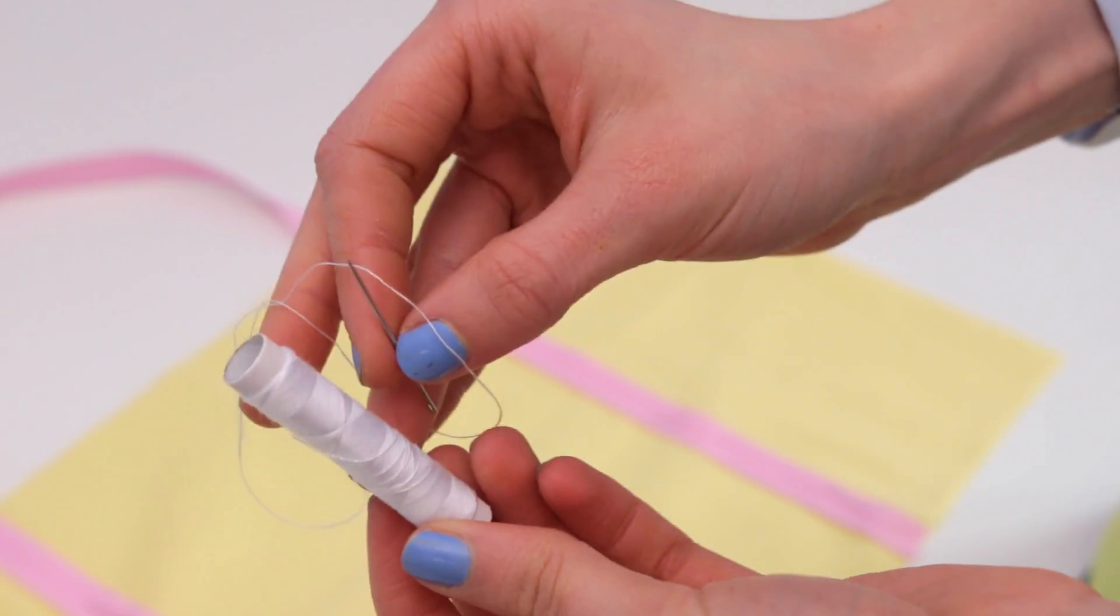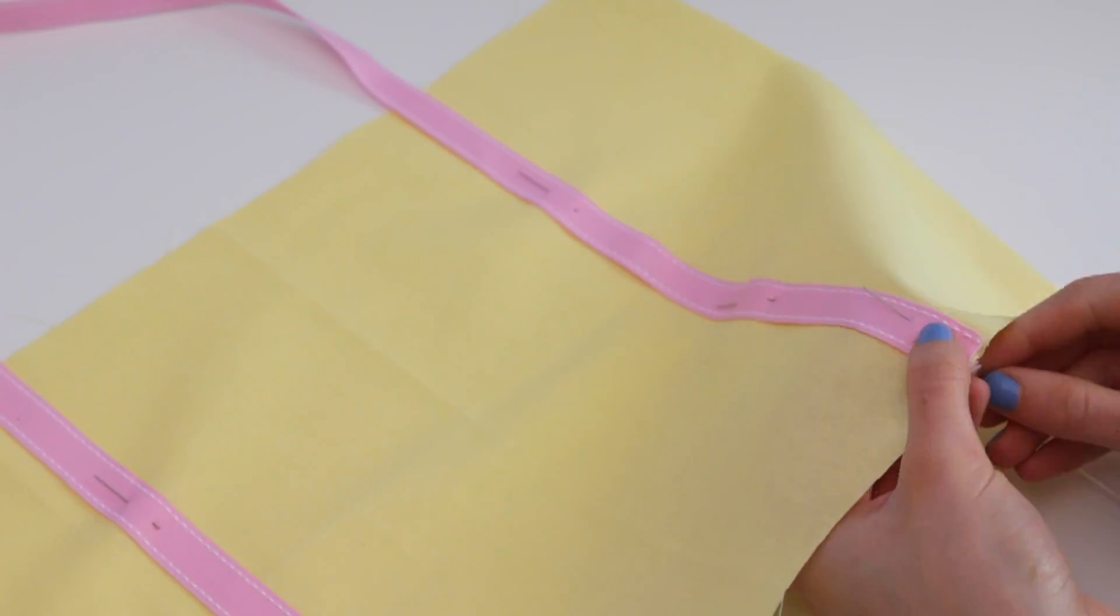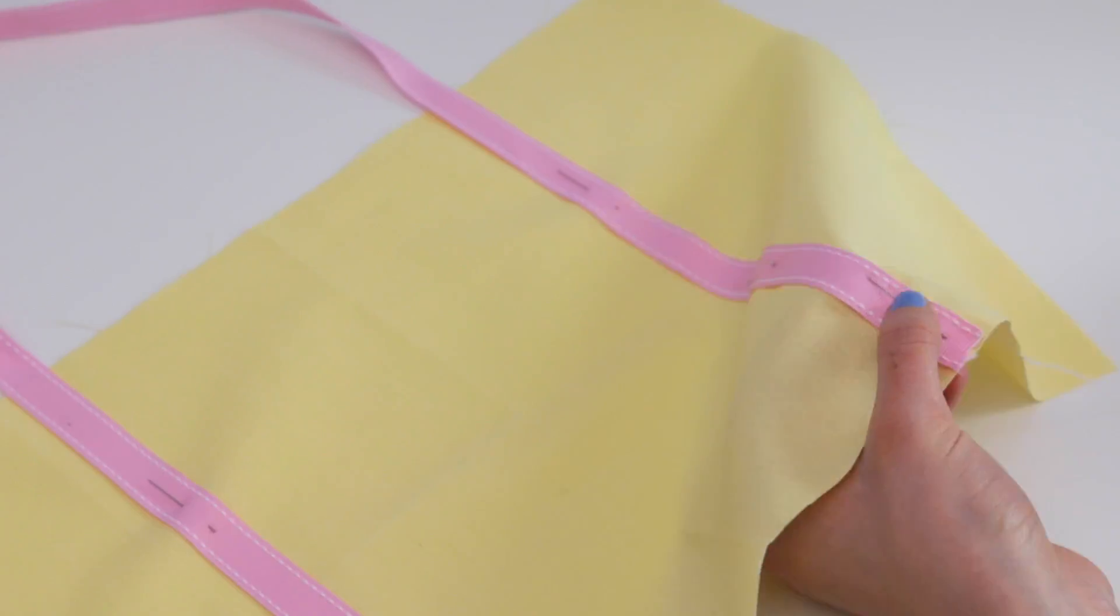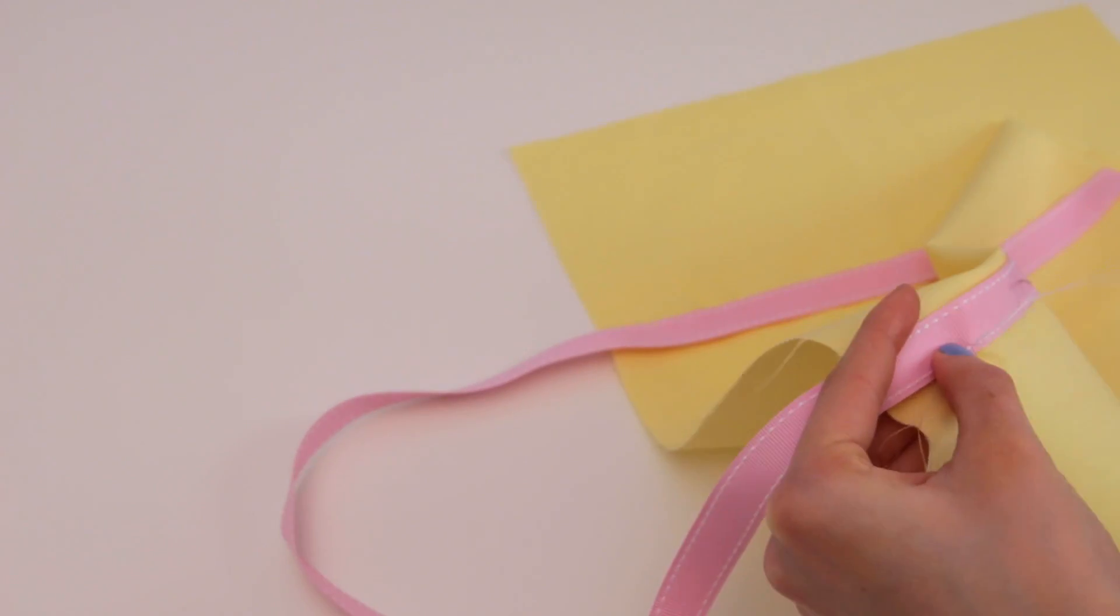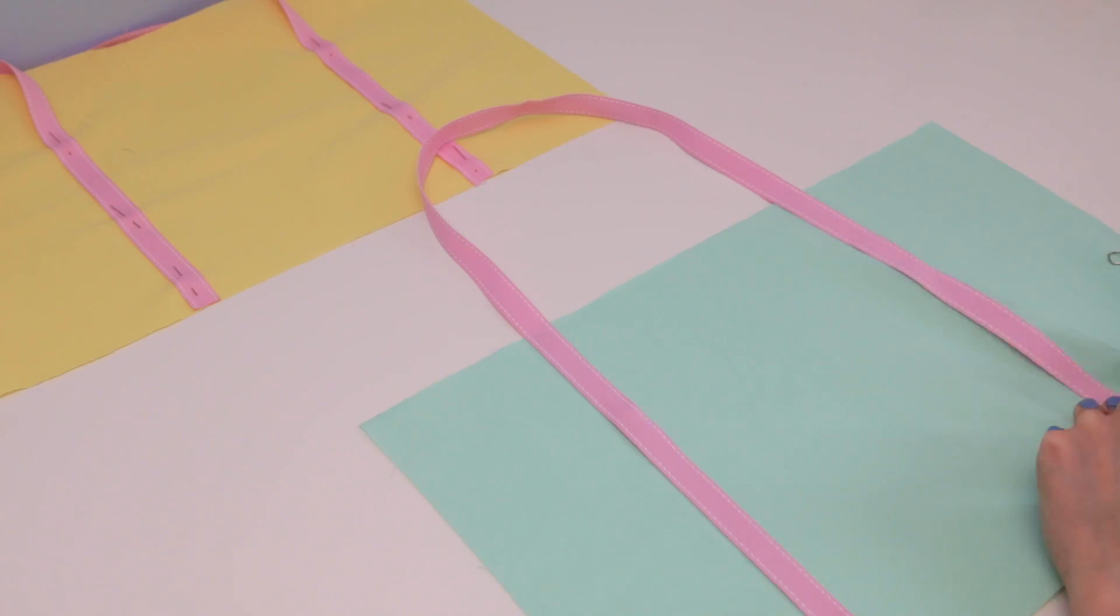I'm going to use a needle and thread rather than a sewing machine for this part to sew the ribbon on, and it's just a personal preference. I'm going to do the same to the green fabric.